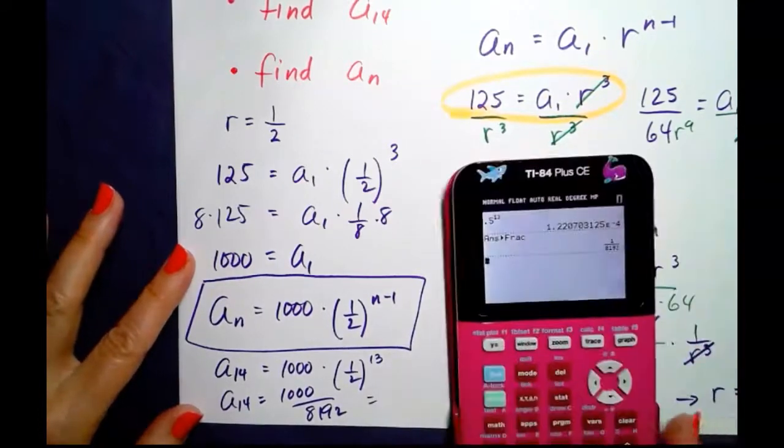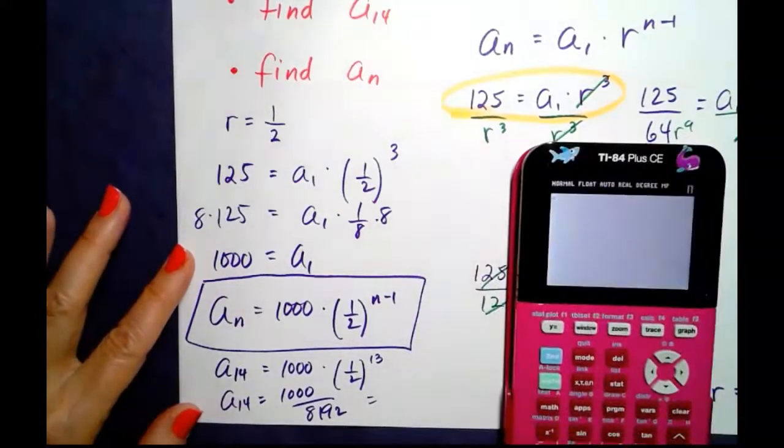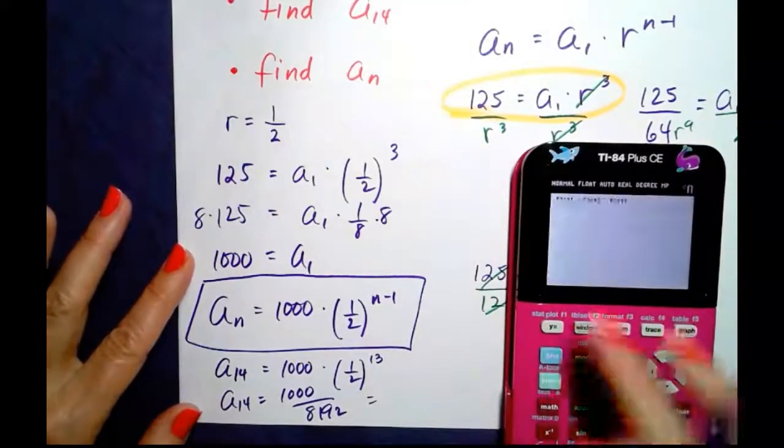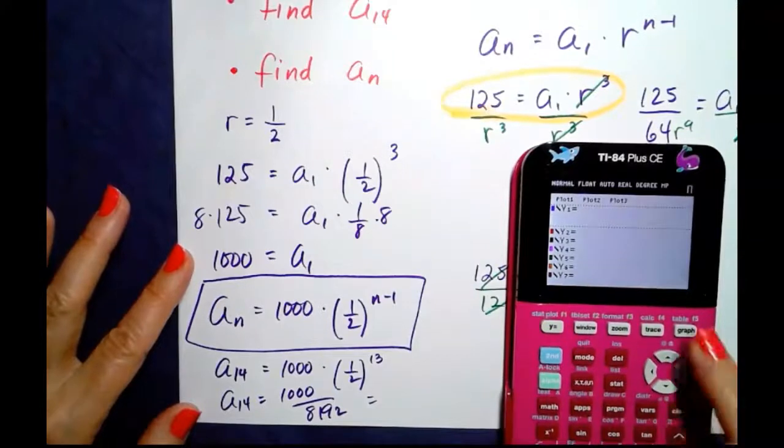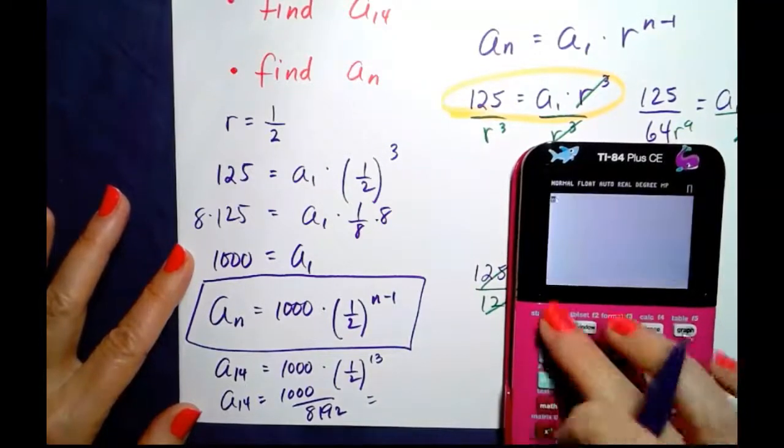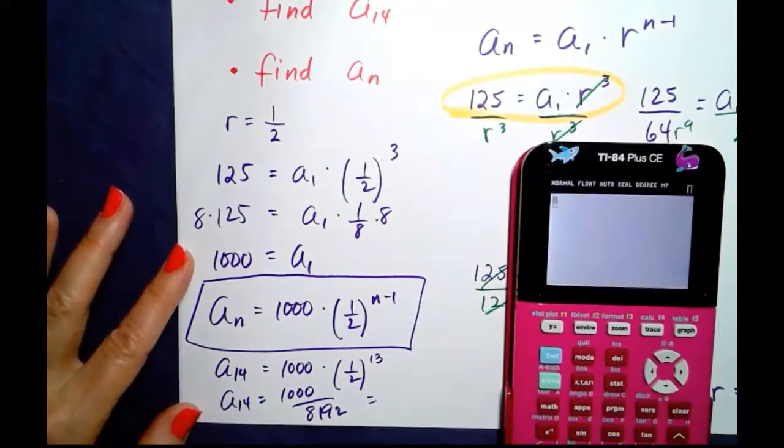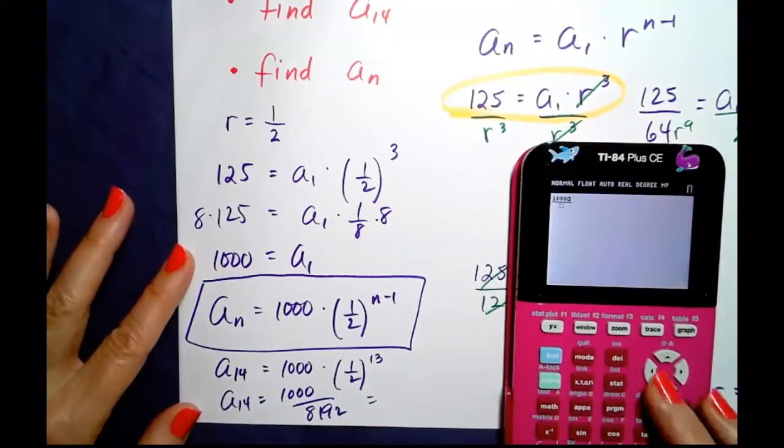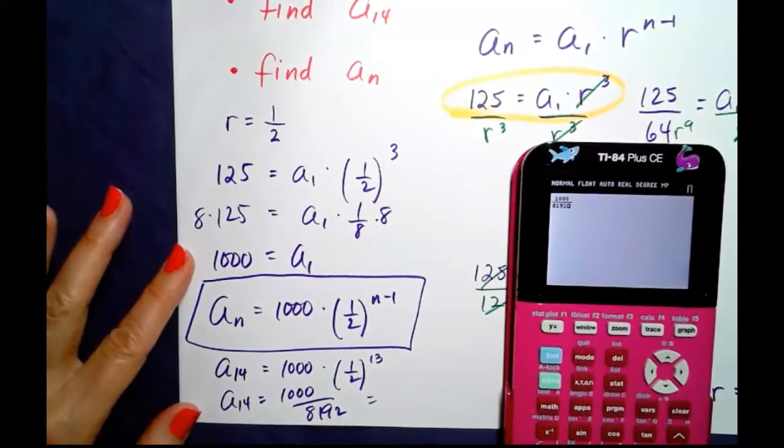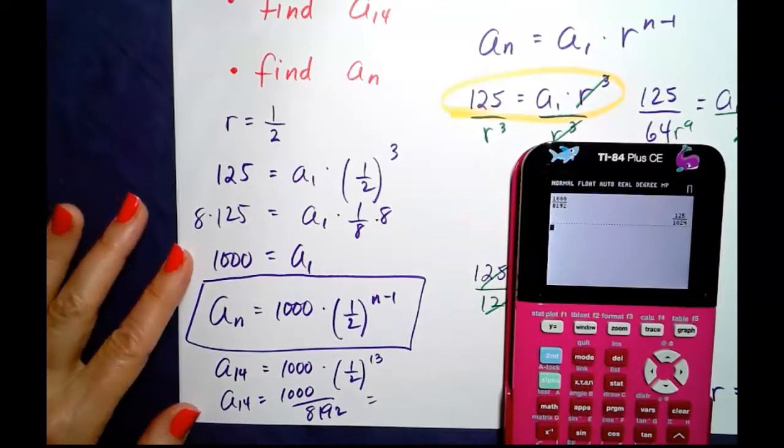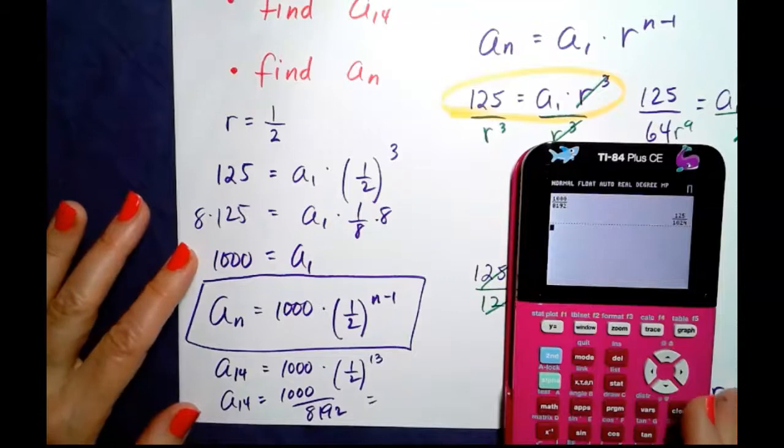Obviously this will simplify. So let's go ahead and simplify it. I'll use my calculator and go to the fraction key. Let's plug this in: 1,000 over 8,192, and that reduces down to 125 over 1024 in simplest terms.